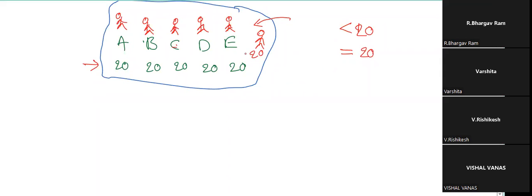Suppose I enter with 26 rupees — what will be our average? The average will increase. You will have 21, because that extra 5 rupees will be given to everyone. The average becomes 21.